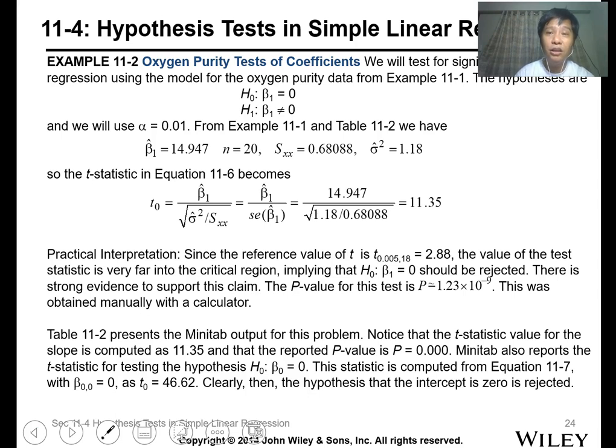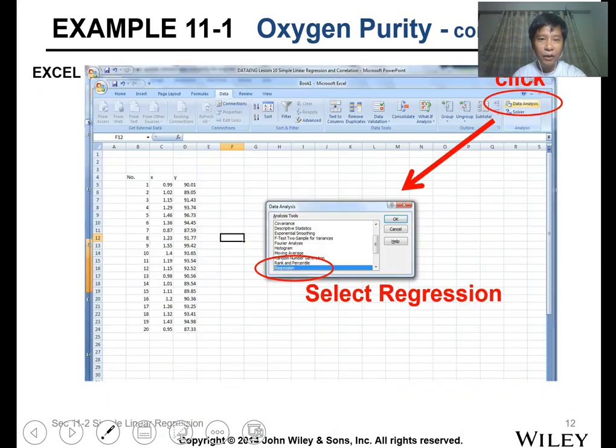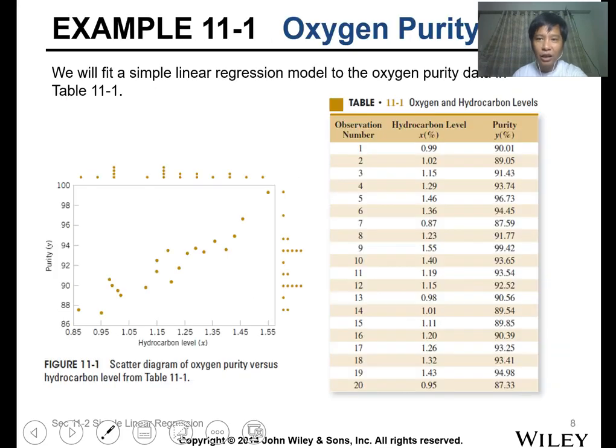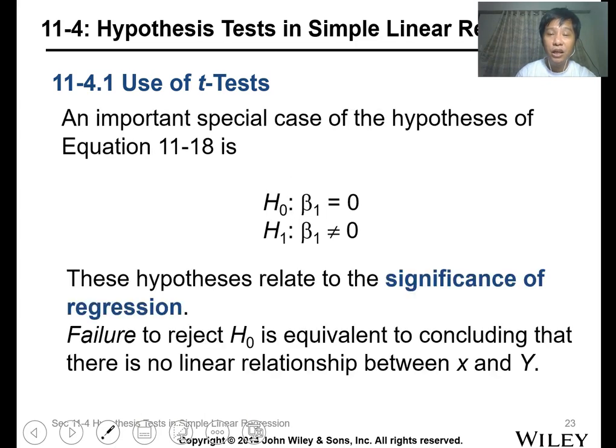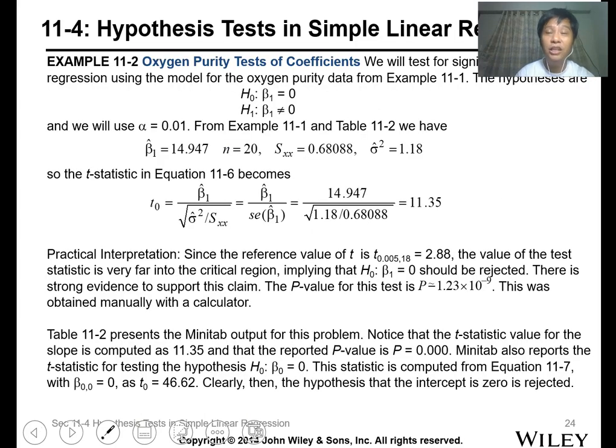You need to change the alpha. You need to change the confidence level because our confidence level is 0.01, so it should be 0.99. Using that confidence level, you can determine from the t-table 0.005 with degrees of freedom n minus 2, which is 18, so that's 2.88. Please check your t-table.